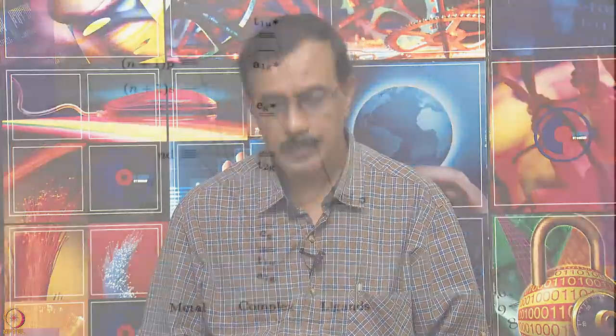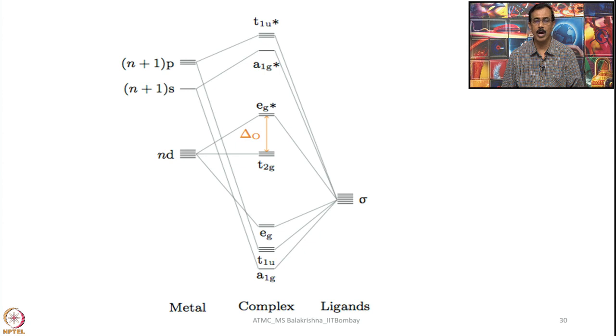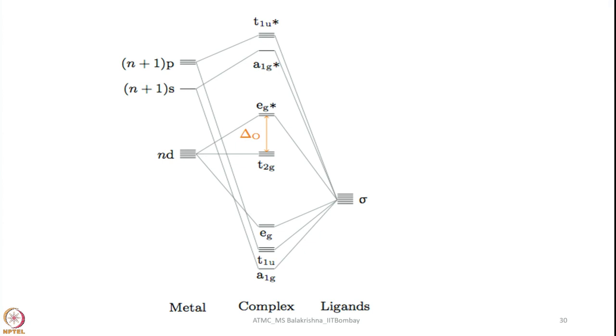Now let us try to use molecular orbital theory, or one can also call it ligand field theory, to explain bonding among coordination compounds. I have just shown a generic MO diagram that depicts bonding in the case of metal complexes with ligands having pure sigma bonding properties. A typical MO diagram can be written in this fashion. I am just overwriting on the diagram to make you familiar with drawing MO diagrams for complexes.